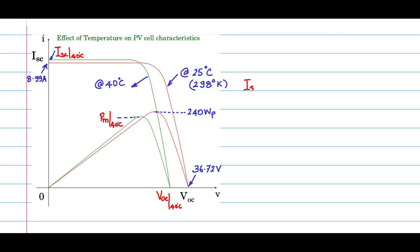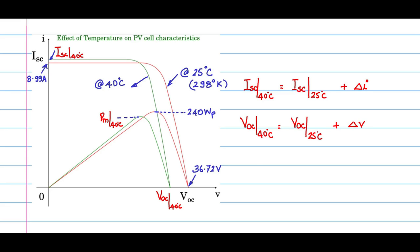Isc at 40 degree C equals the short circuit current at the standard temperature of 25 degree C plus delta I. Likewise, Voc at 40 degree C equals Voc at 25 degree C plus delta V. And the peak power at 40 degree C is given by the peak power at the standard temperature of 25 degree C plus delta P.